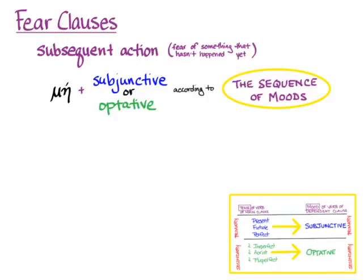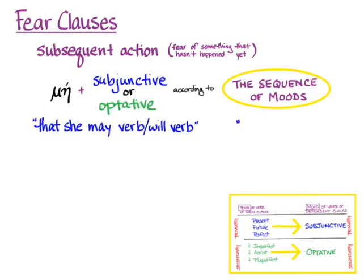So the rule for fear clauses with subsequent action is: μή plus the subjunctive or optative according to the sequence of moods. The default translation is 'that she may verb' or 'that she will verb.' You'll also sometimes see the less modern translation 'lest she verb' — I like the word 'lest,' but it's pretty much out of fashion, so I won't use it for the rest of the video.